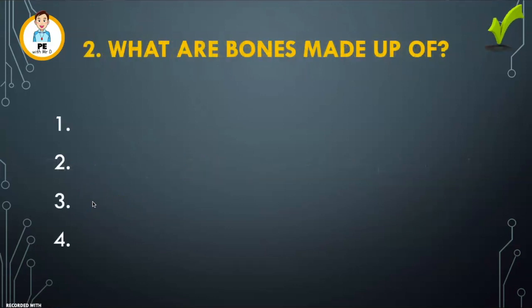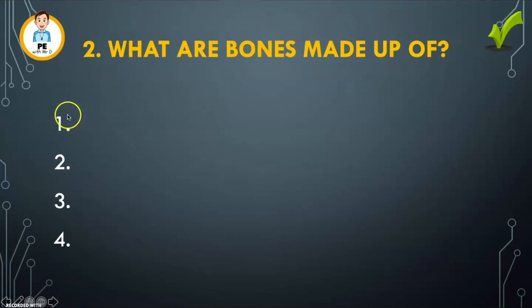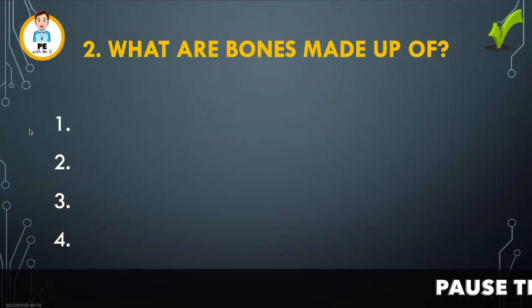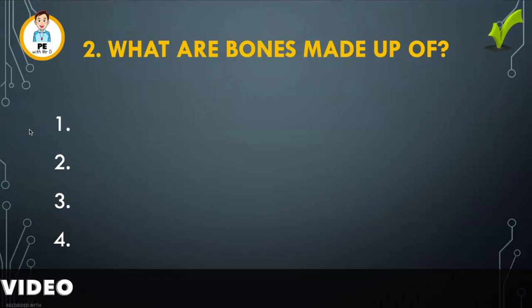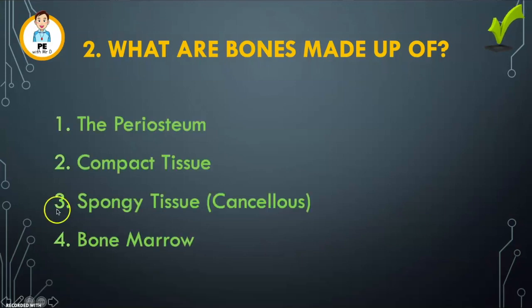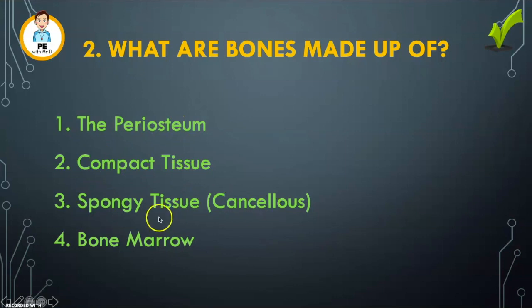Moving on to our second review question: what are the bones made up of? Grab your piece of paper and write down one, two, three and four. Fill in the answers. We have the periosteum, the compact tissue, the spongy tissue or the cancellous tissue, and the bone marrow. These are the main features which make up our bones.